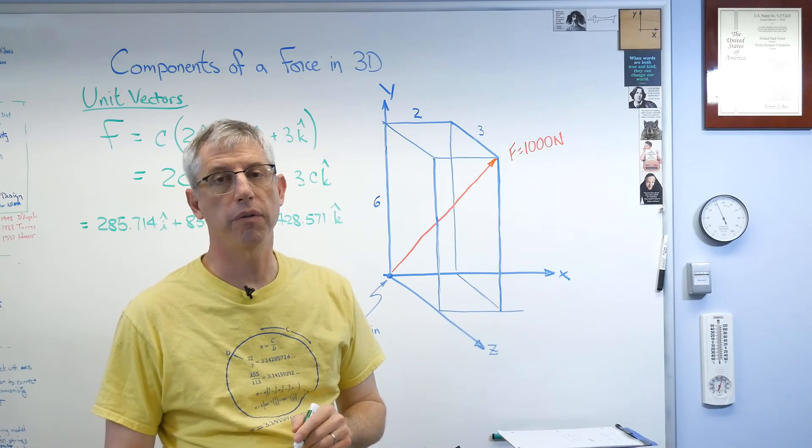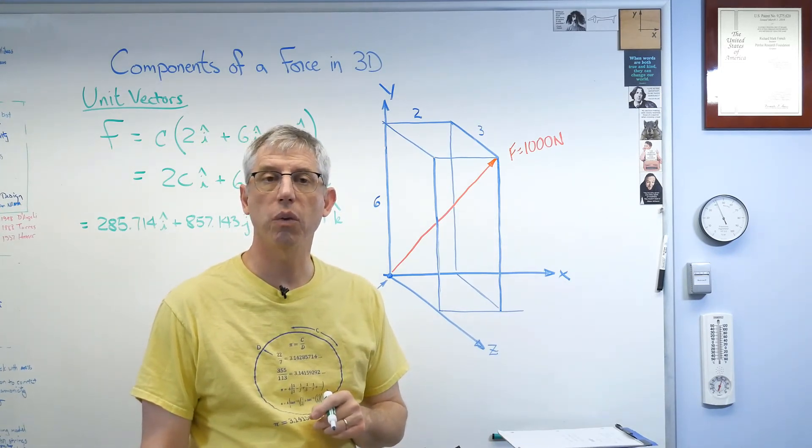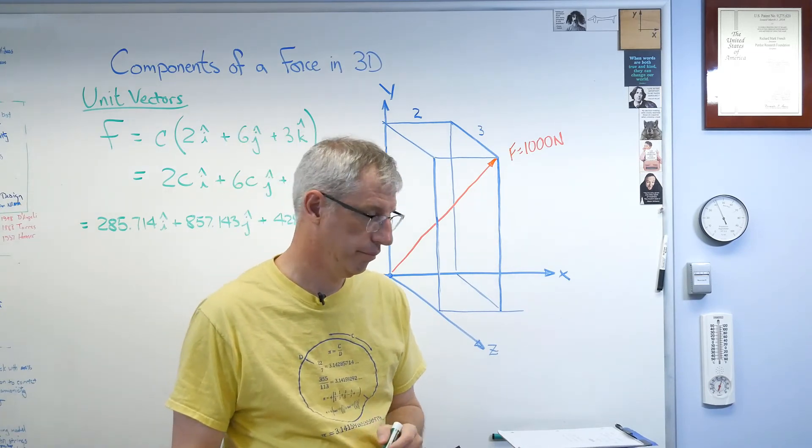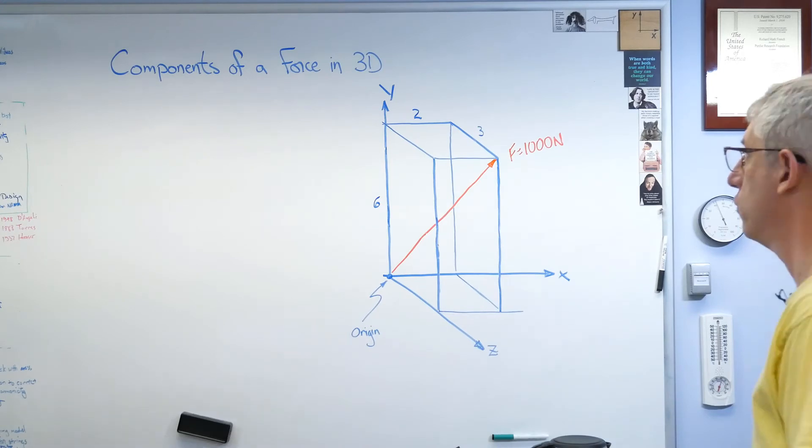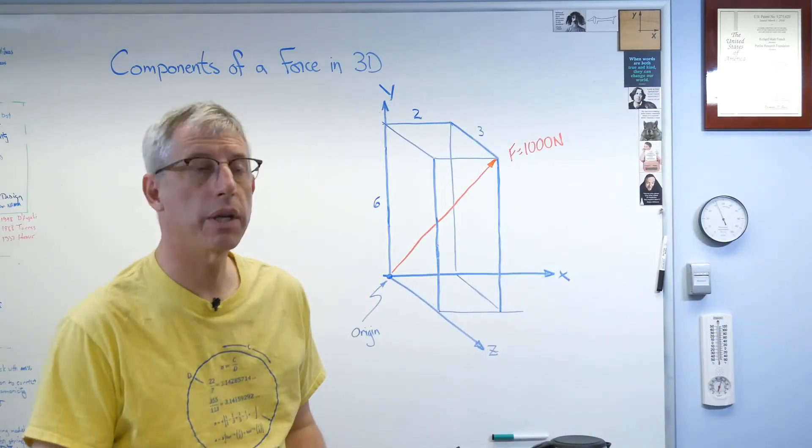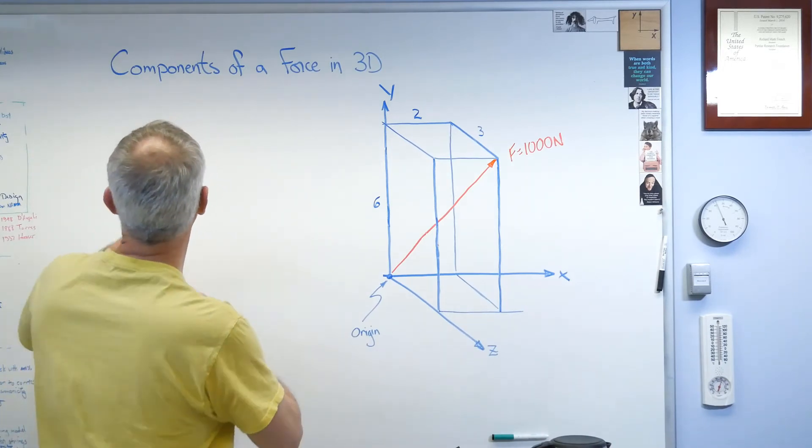All right. I'm going to ask the blackboard fairy to clean this up a little bit. And then we're going to do something with what's called cosine angles. Okay, the next thing we're going to do here is look at this the other way, using something called cosine angles.